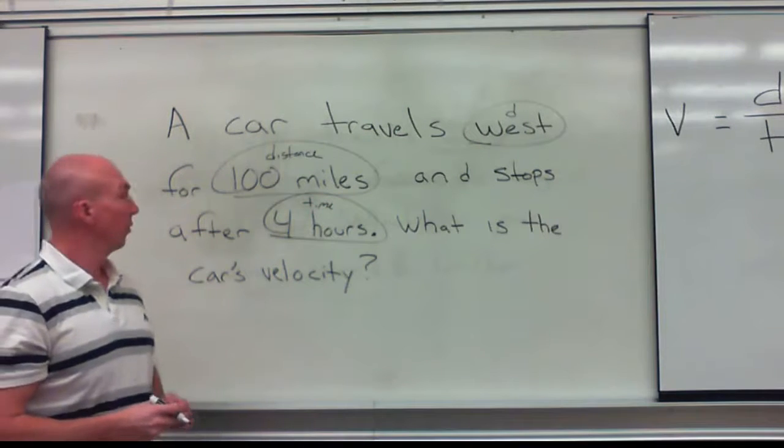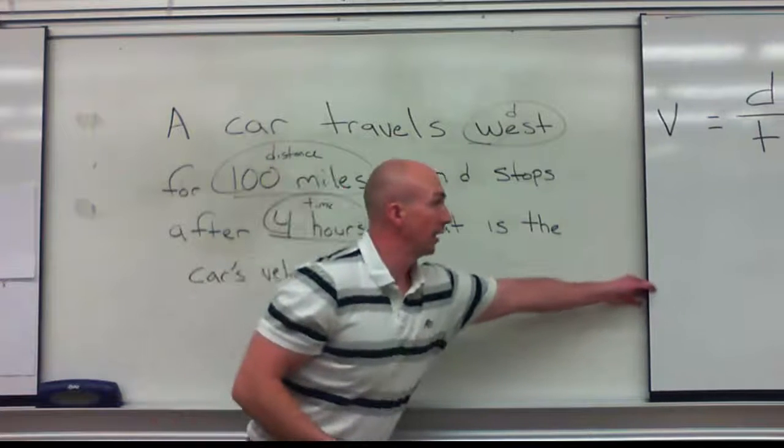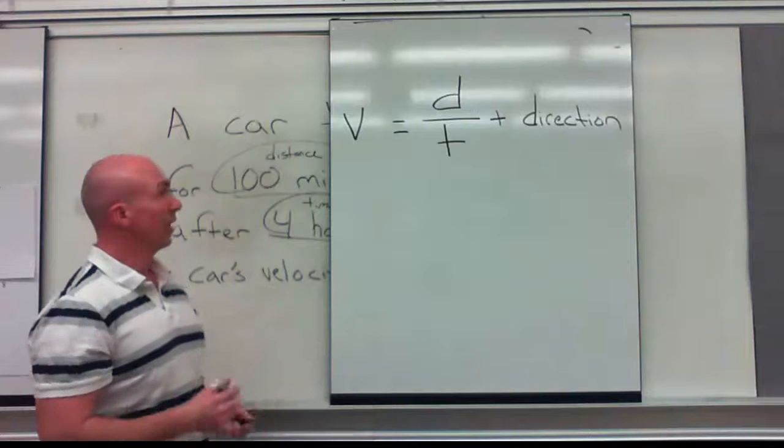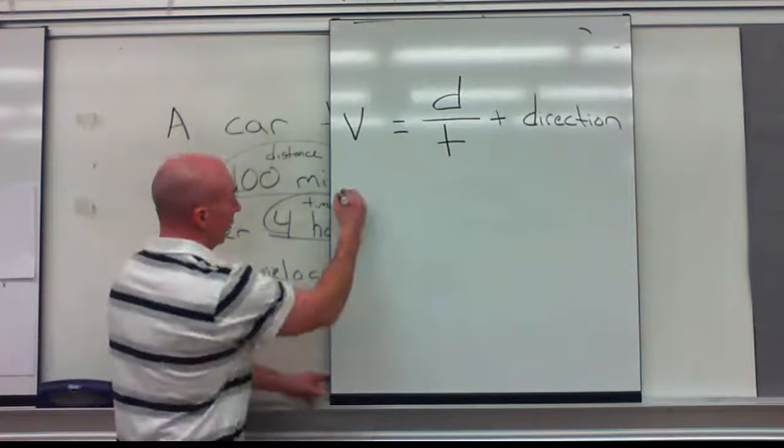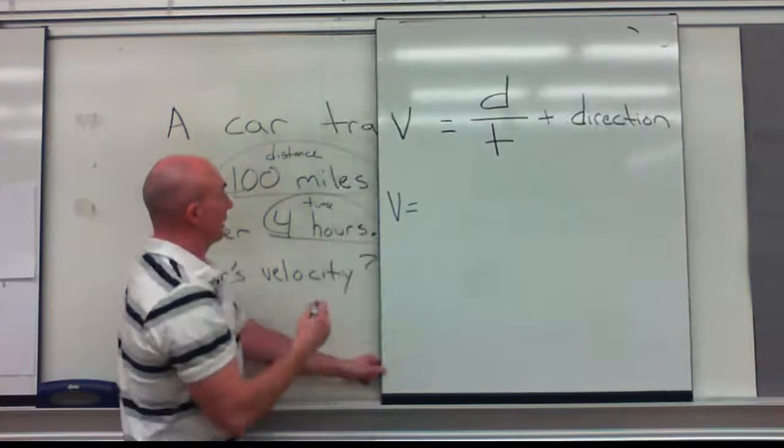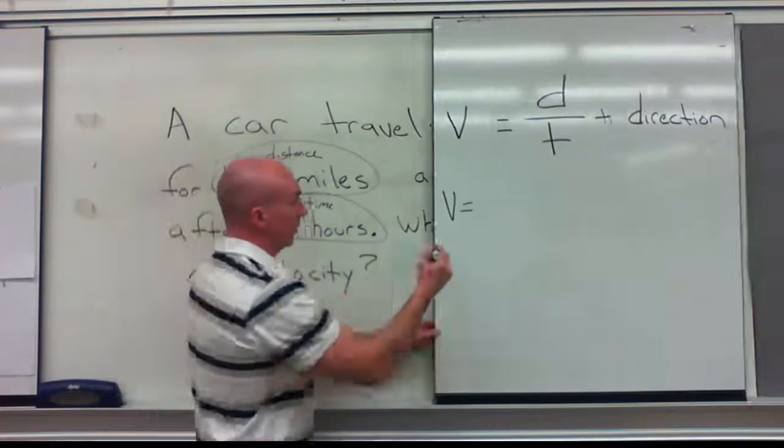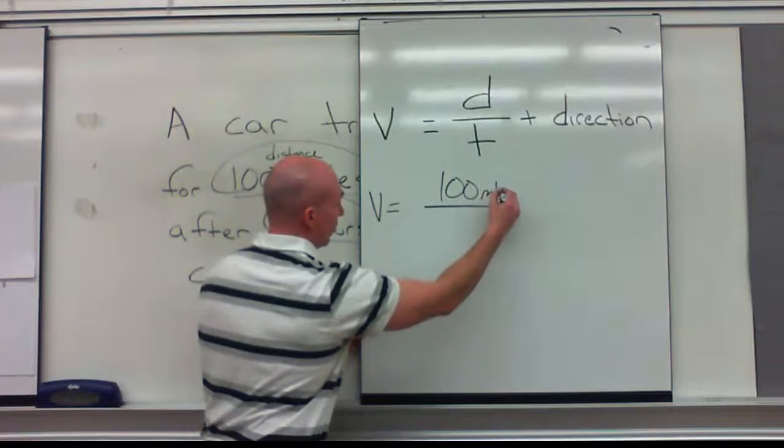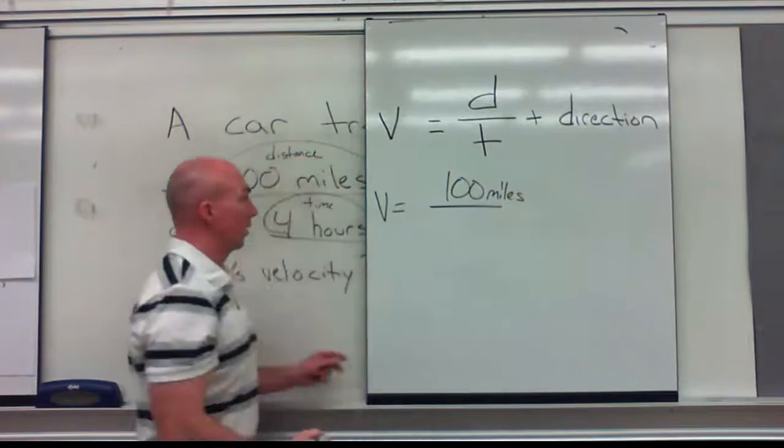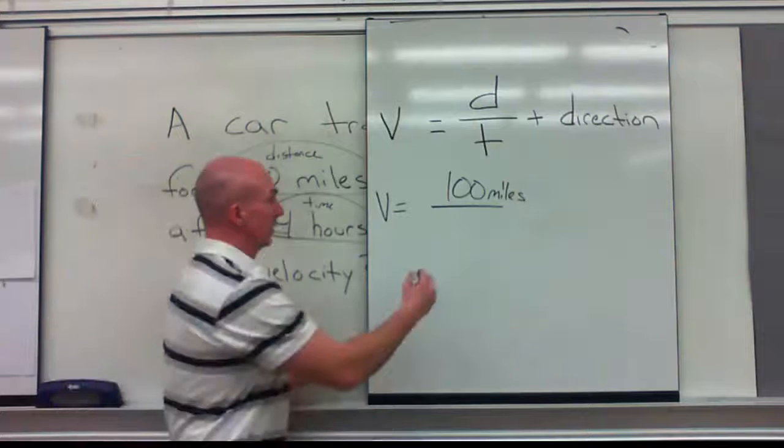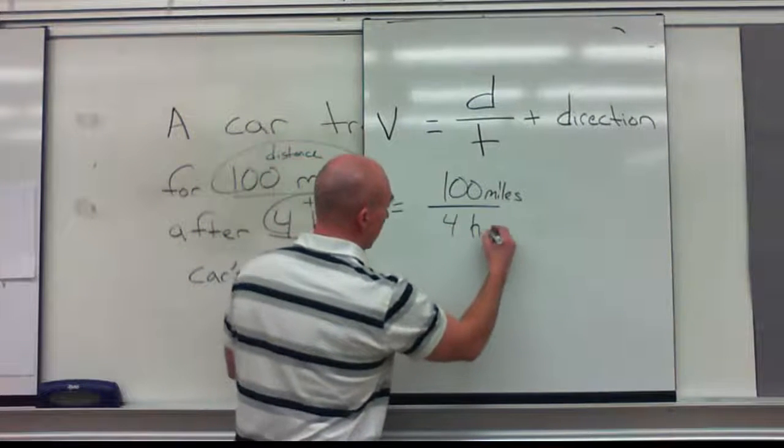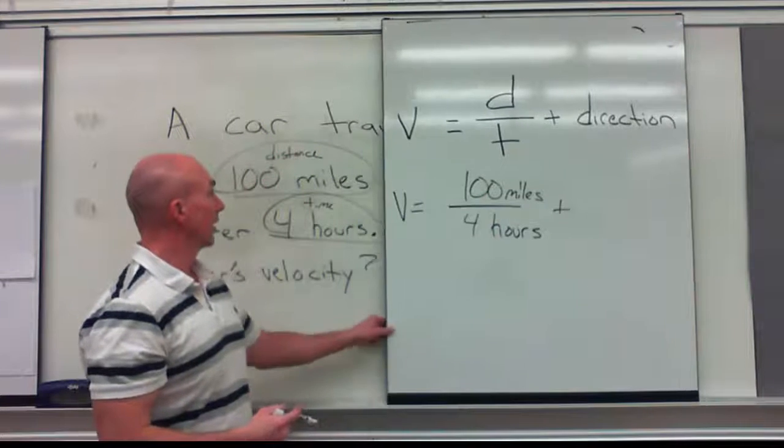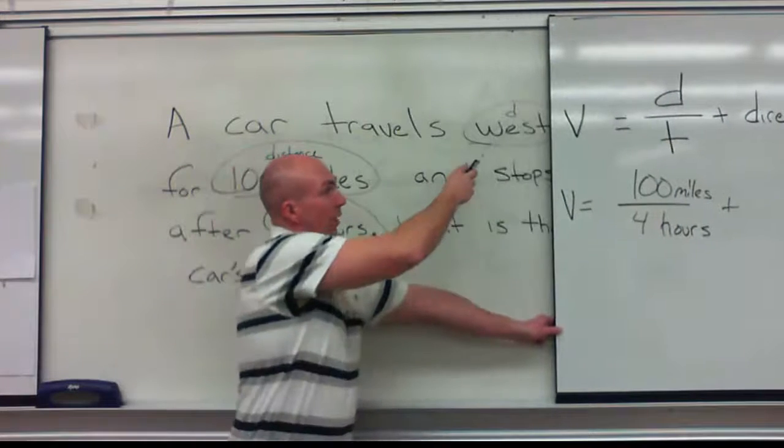So just like speed, we put in our equation, distance over time. This time we're going to add direction. So velocity is going to equal a distance of 100 miles over a time of 4 hours. And this time we're adding direction, which in our example was west.